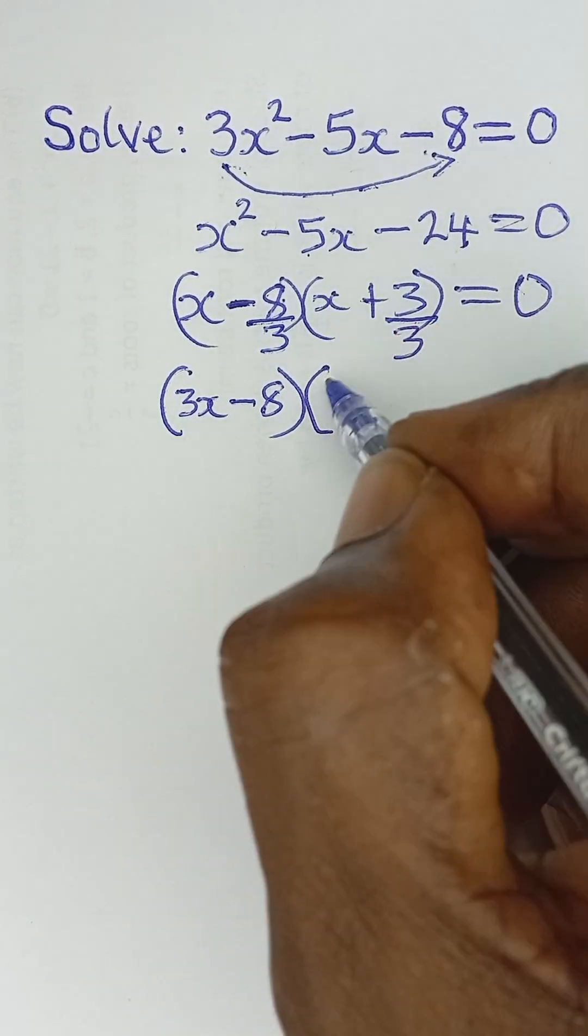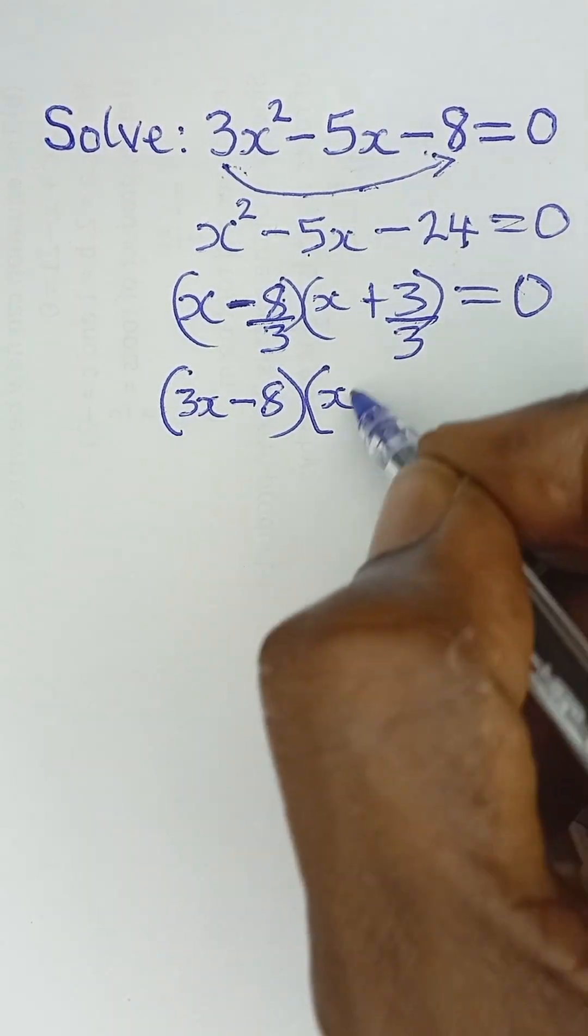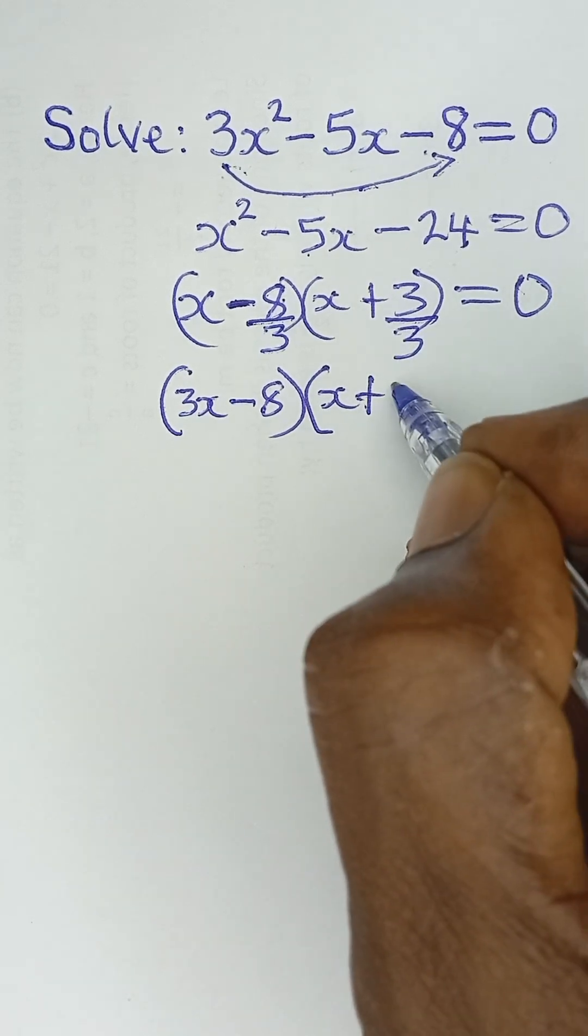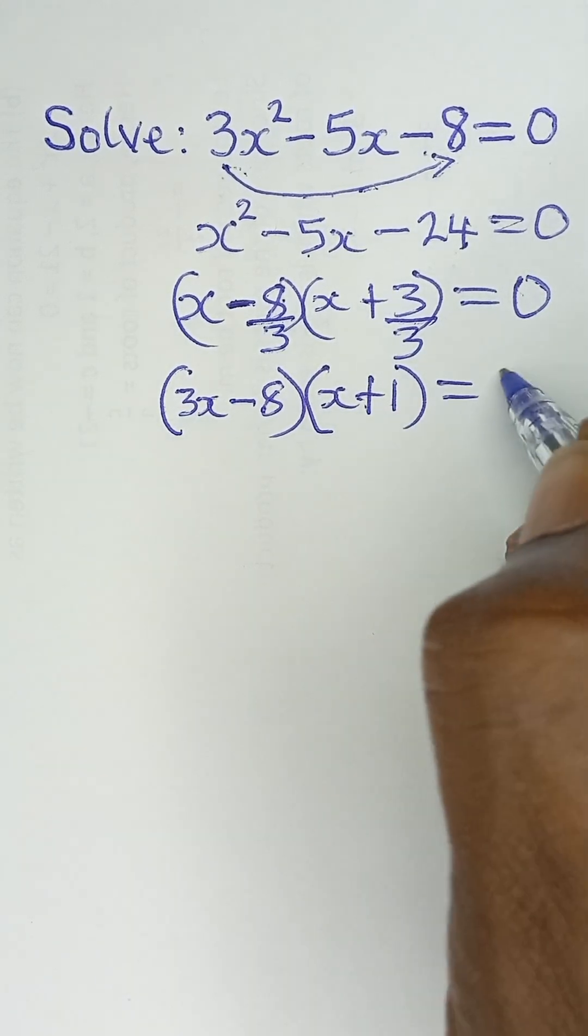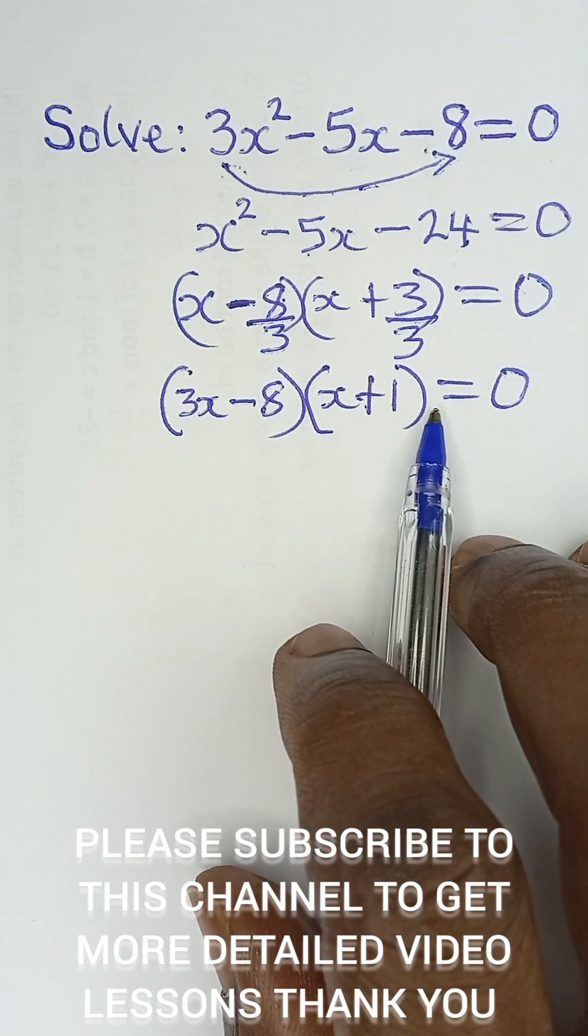And then here remains x. We can simplify this to give us 1. So 3 divided by 3 will give us 1. And that will be equal to 0. So that is specially factored.